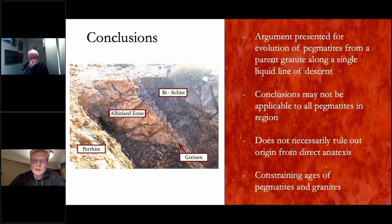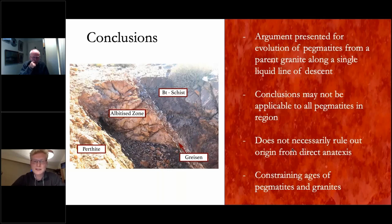In conclusion, I've presented this argument that all of the pegmatites in the area are results of fractionation of granitic melt from a single parent granite along a single liquid line of descent. But again, the conclusions may not be applicable to all pegmatites in the region. This was only done over a 30 square kilometer exploration license. It doesn't necessarily rule out the origin from direct anatexis. It's entirely possible that, deeper in the crust, you had partial melting of a metasedimentary rock, and that partial melt used the thermal aureole of the granite to migrate and therefore form the zonations that we see in the field.